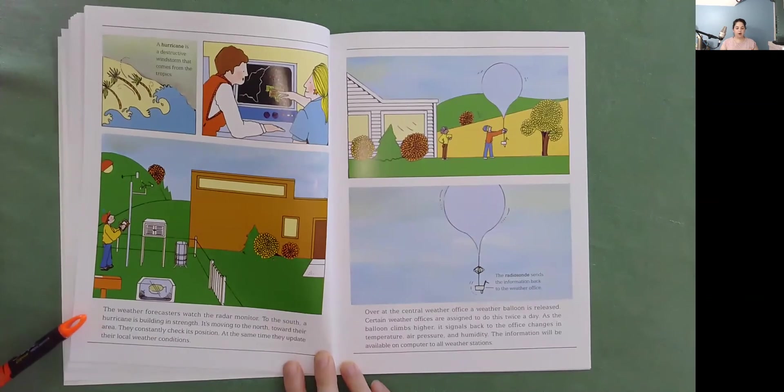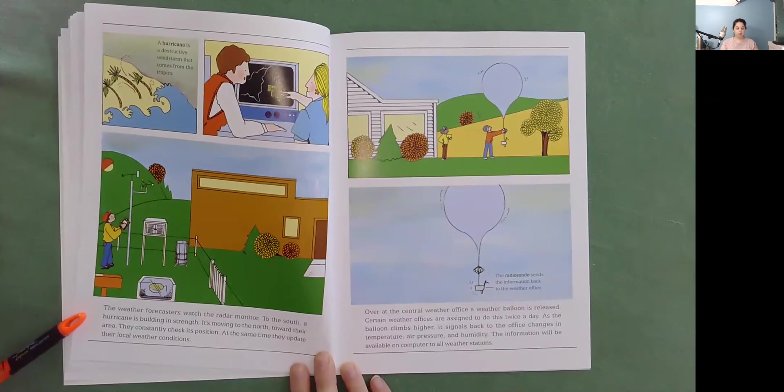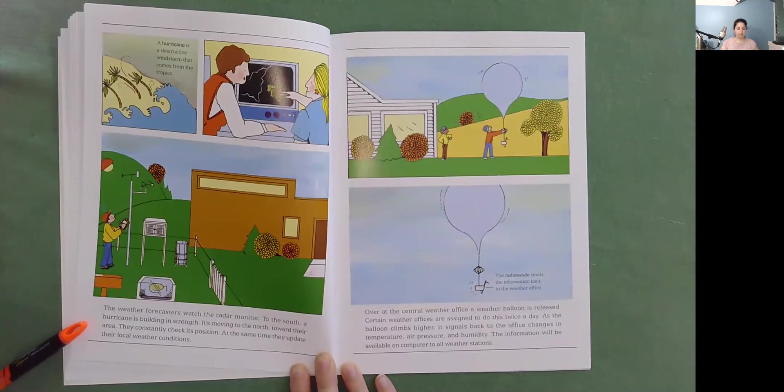The weather forecasters watch the radar monitor. To the south, a hurricane is building in strength. It's moving to the north, toward their area. They constantly check its position. At the same time, they update their local weather conditions.